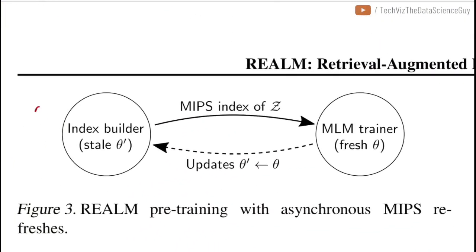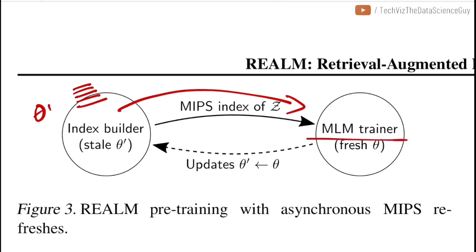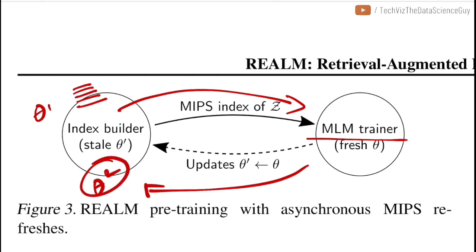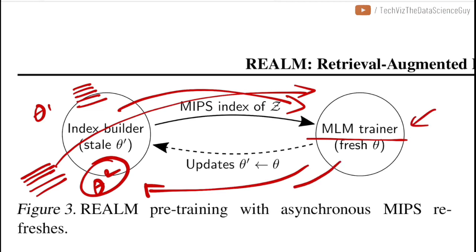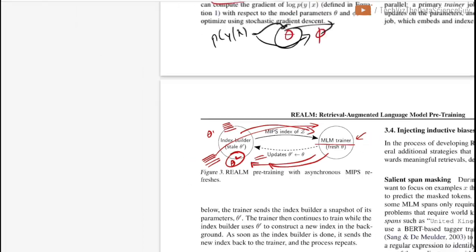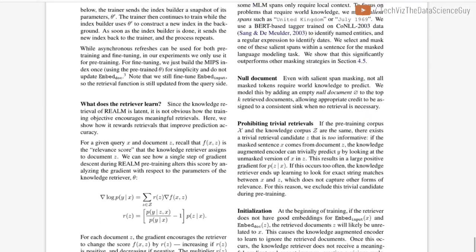Concretely: the model starts with theta_1 parameters and indexes all documents. After training and back-propagating, parameters update to theta_2; the index is rebuilt with theta_2 embeddings. The MLM trainer uses this updated index to retrieve top-k documents, trains again, updates parameters again, and this cycle continues asynchronously — a reasonable solution to keeping the retrieval index current.